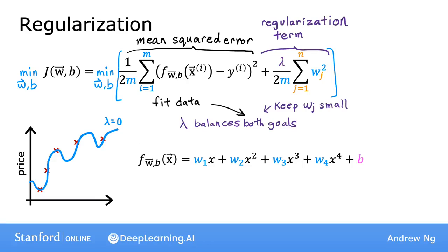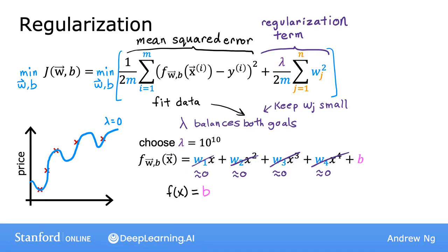Now let's look at the other extreme. If you set lambda to a really, really large number — say 10 to the power of 10 — you're placing very heavy weight on the regularization term, and the only way to minimize the cost is to make all the values of w very close to zero. So the learning algorithm will choose w1, w2, w3, and w4 to be extremely close to zero, and f of x basically equals b — the algorithm fits a horizontal straight line and underfits.